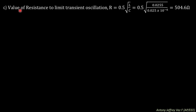Next, find the critical resistance to limit transient oscillation using R = 0.5 × √(L/C). Substituting L = 0.0255 Henry and C = 0.025 × 10^-6 farad, the critical resistance to be inserted across the circuit breaker contacts is 504.6 ohms.